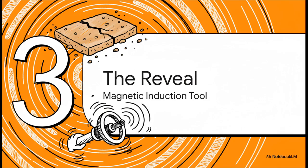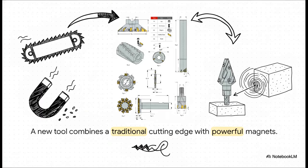A recently discovered patent application reveals an absolutely brilliant solution. It's called the magnetic induction tool. And the core idea is so simple, it's almost beautiful. You basically take a regular cutting tool, think of a drill bit or a big saw blade, and you embed powerful magnets right into the tool itself, right next to the cutting edges. It becomes a one-two punch.